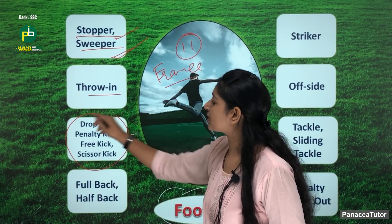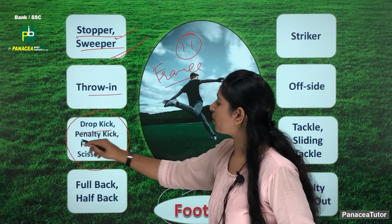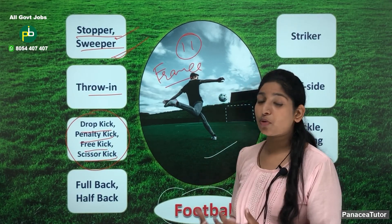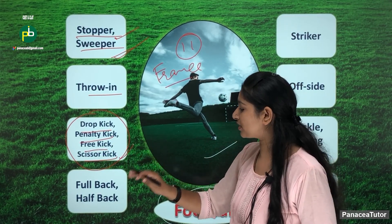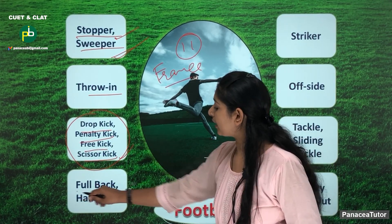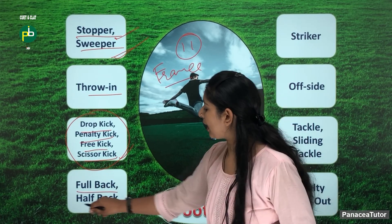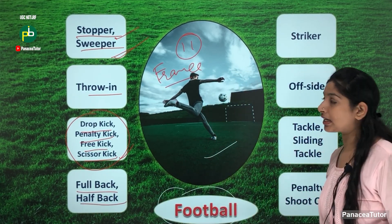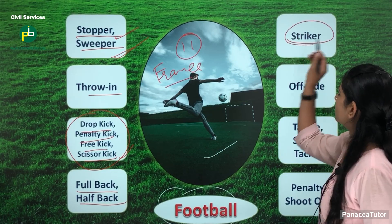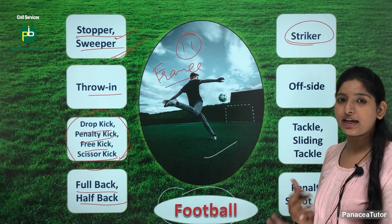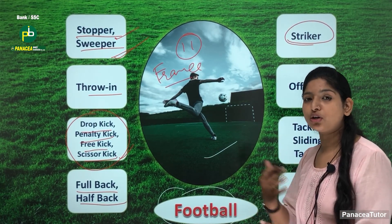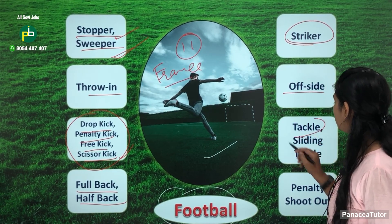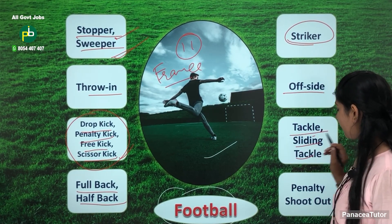After that, there are types of kicks — throw-in, drop kick, penalty kick, free kick, scissor kick. Full back and half back are also terms associated with football. The striker is the player who shoots the ball. Offside, tackle and sliding tackle are also important terms, along with penalty shootout.